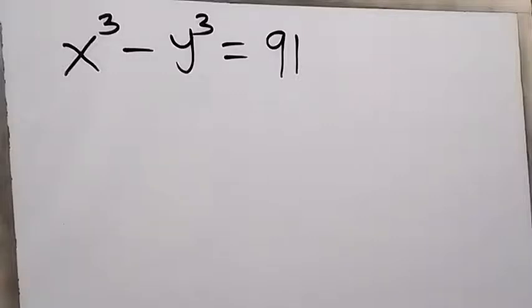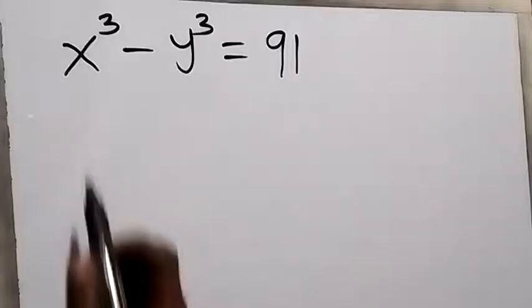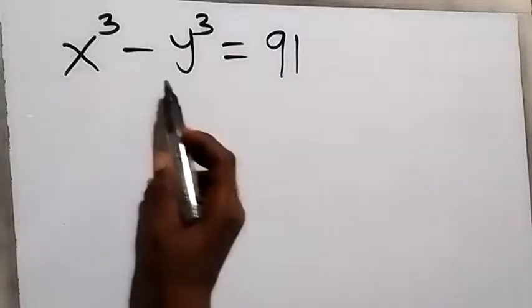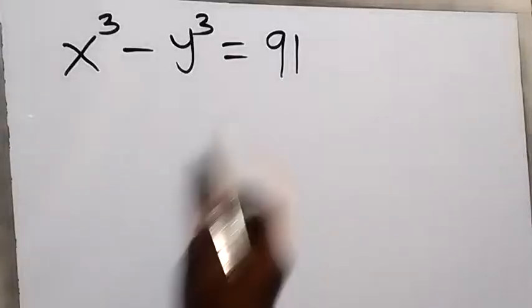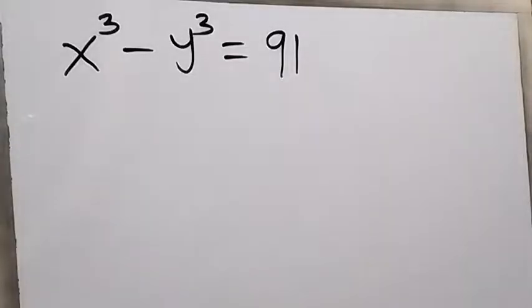Hello, you are welcome. How to solve this Olympiad problem: x raised to the power 3 minus y raised to the power 3 equals 91.